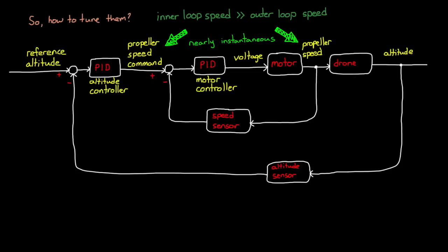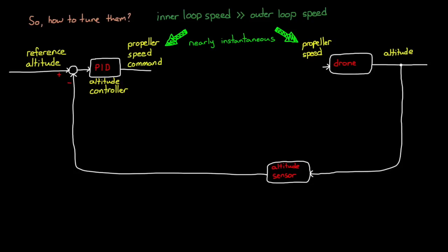Therefore, to tune the outer loop, you can make the assumption that the inner loop doesn't exist, and that the command just goes straight through. In this way, you're essentially tuning two single loops exactly like you're used to.